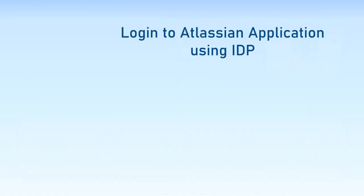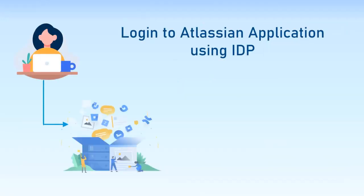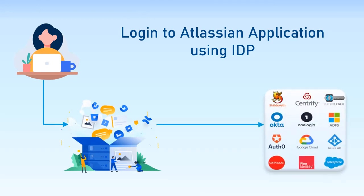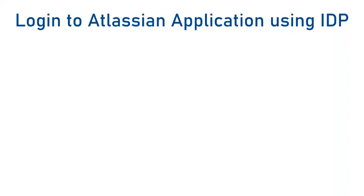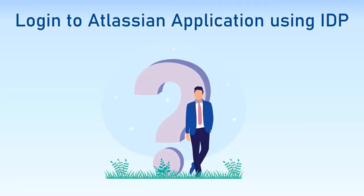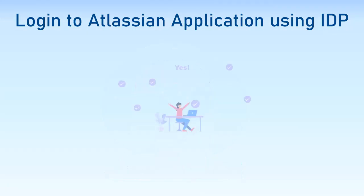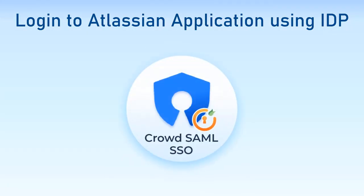But what if you want users to log into the Atlassian applications using their identity provider credentials and still want to manage the user permissions using Crowd? Is it possible? Yes, it is possible with Mini Orange.